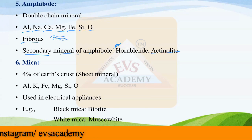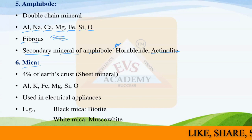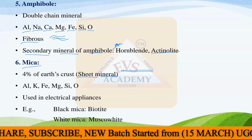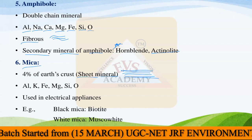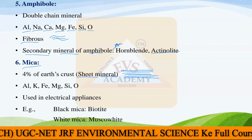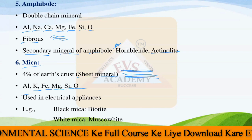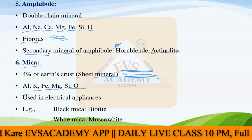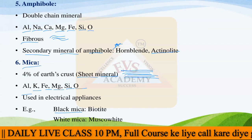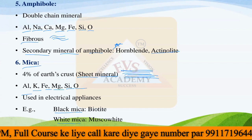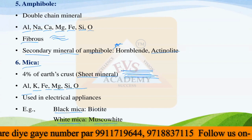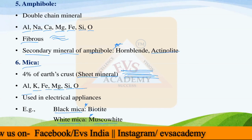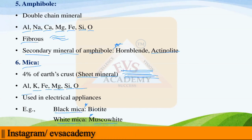The sixth type of mineral is mica, which makes up 4% of the earth's crust. Mica is also called a sheet mineral because it forms in different sheets. It is a mixture of aluminium, potassium, iron, magnesium, silicon, and oxide, and is used in electrical appliances because of its heat-resistance property. The two main types of mica are black mica, called biotite, and white mica, called muscovite.